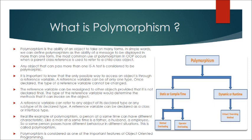Any object that can pass more than one is-a test is considered to be polymorphic. It is important to know that the only possible way to access an object is through a reference variable. A reference variable can be of only one type. Once declared, the type of a reference variable cannot be changed. The reference variable can be reassigned to other objects provided that it is not declared final.